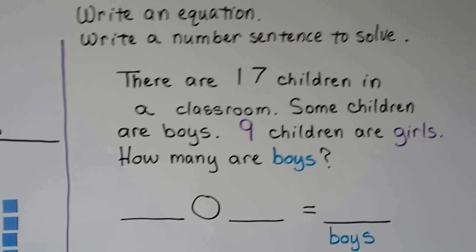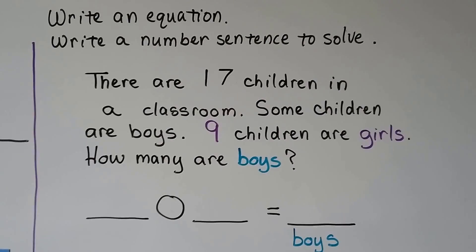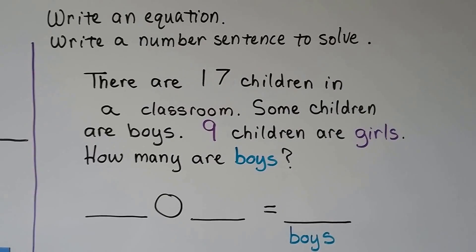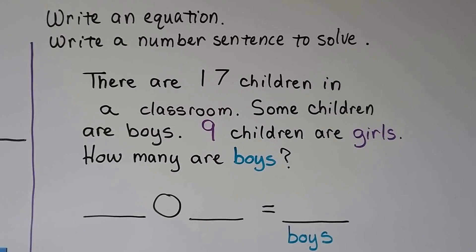Write an equation. Write a number sentence to solve. There are 17 children in a classroom. Some children are boys. Nine children are girls. How many are boys?